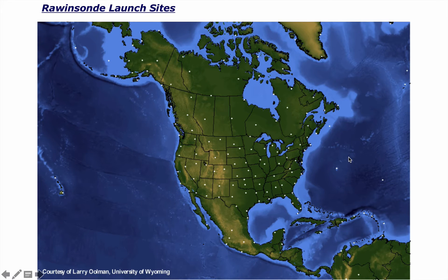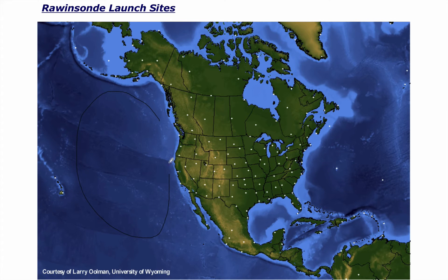Each white dot on this map shows where we launch weather balloons twice a day across North America. The density of the network is honestly not great — I would love to see 10 times the number of launch locations. Every time a major hurricane approaches the United States, we launch balloons far more frequently to better capture atmospheric flow and initialize our weather forecasting models. Over the ocean, we don't launch any weather balloons, so the only way to get vertical atmospheric data there is through satellite — which is not nearly as good. Some locations like the US and Europe have high-density networks; others do not.